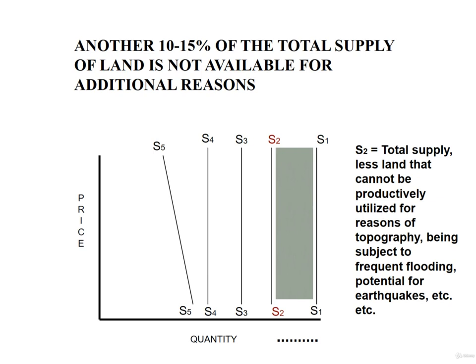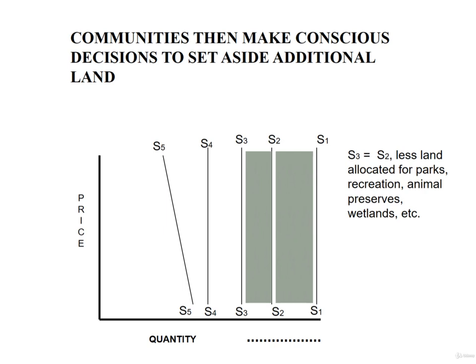In our world, not all the land area of any region is available for development. A portion cannot, at least with the current technologies available, be productively utilized for reasons of topography, being subject to frequent flooding, potential for earthquakes, etc. The quantity lost to the total supply is reflected by the distance between supply curves S1 and S2. Then there are lands a community allocates for parks, recreation, animal preserves, wetlands, etc. In our hypothetical example, the amount of land removed from developable supply is the difference between S1 and S3.